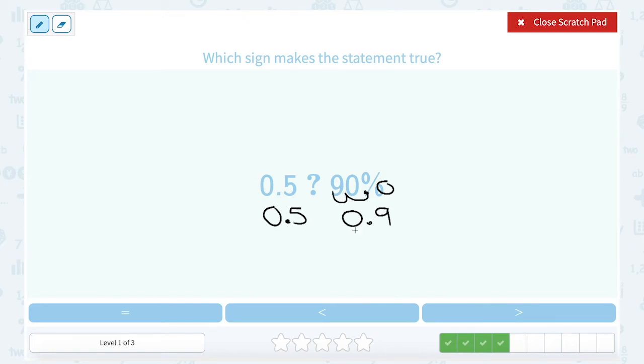So 0.5 is smaller than 0.9, so I'm going to fill that in with my less than symbol. 0.5 is less than 0.9.